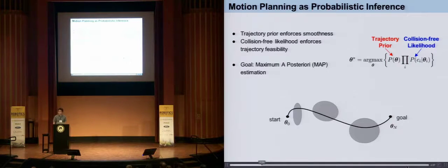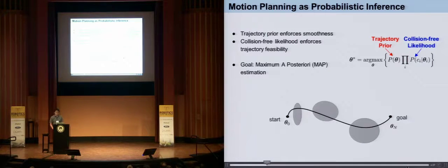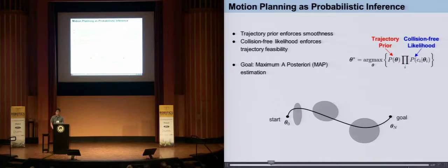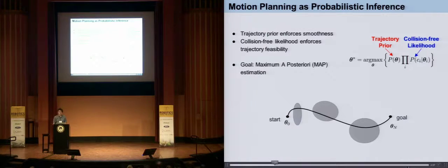We achieve this efficiency by converting planning problems into probabilistic inference. The posterior probability of a given trajectory can be calculated by a prior distribution which enforces trajectory smoothness, and also a collision-free likelihood which enforces trajectory feasibility. Then we can perform maximum a posteriori estimation to get a locally optimal trajectory.